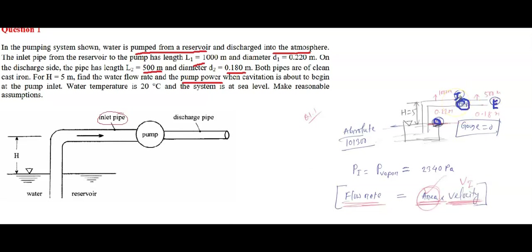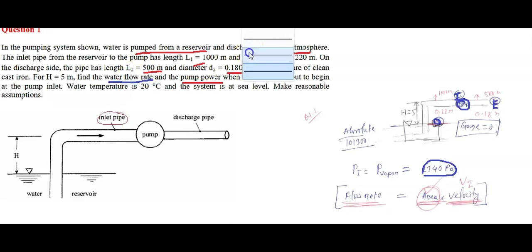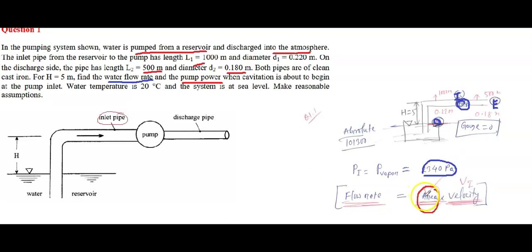At the pump inlet section I, cavitation is about to happen, so the pressure equals the vapor pressure, which is 2340 Pa. The first question is to calculate the water flow rate, which is area times velocity. We can calculate the area from the known diameter, but we don't know the velocity at the pump inlet — so we need to find V_i first.